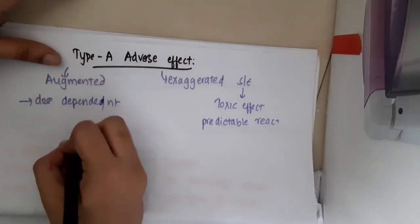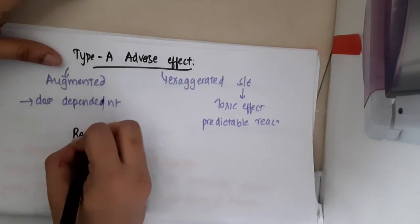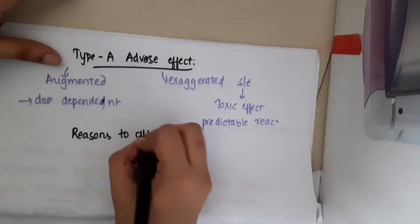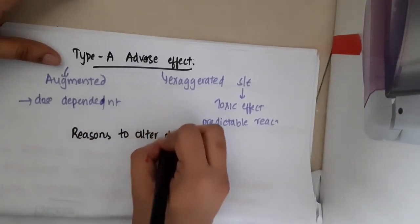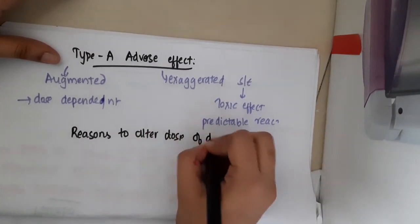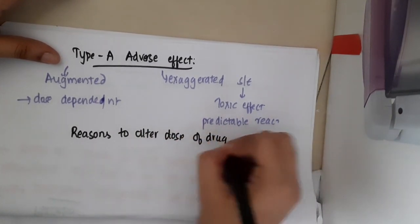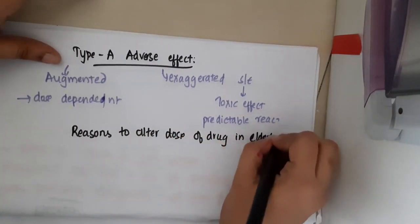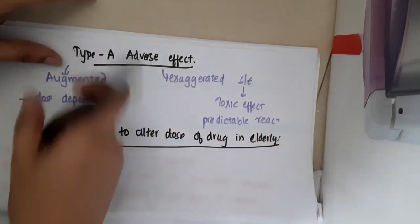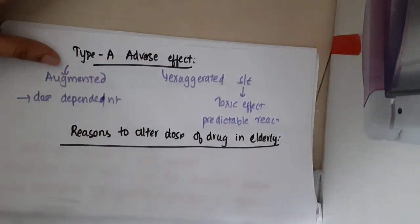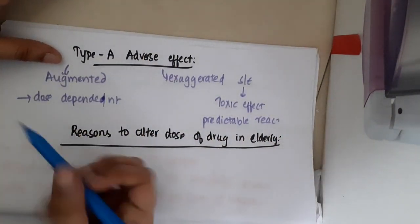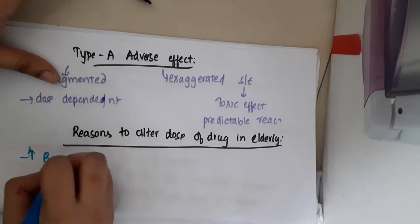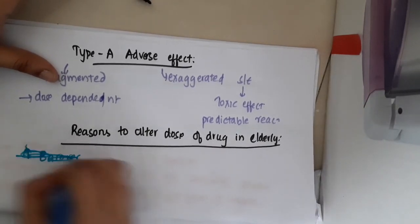Hello friends. Let us now learn the reasons to alter the dose of drug in elderly. The main reasons to alter the dose of drug in elderly include increased baroreceptor sensitivity.